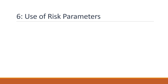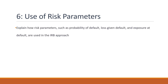Finally, we have the use of risk parameters. Risk parameters such as probability of default, loss given default, and exposure at default are used in the IRB approach to calculate risk weights for each exposure. Probability of default is the likelihood that a borrower will default on their obligation, while loss given default is the amount of loss a bank can expect to incur if a borrower defaults. Exposure at default is the amount of exposure that a bank has at the time a borrower defaults.